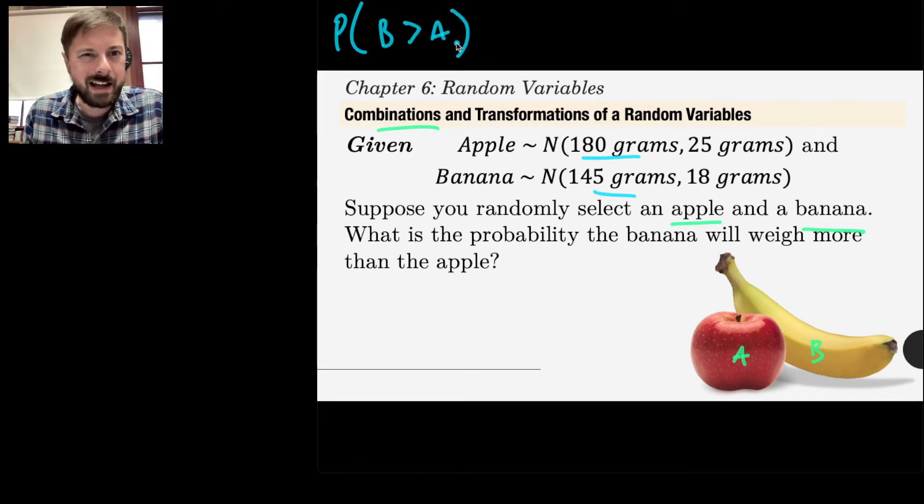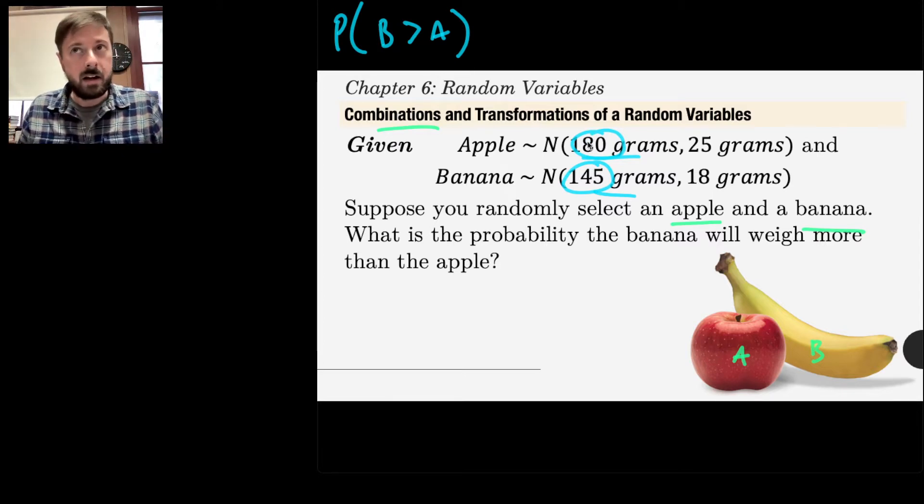So I'm wondering, what will be the probability that a randomly selected banana will be greater than an apple? If I had to guess, I'm guessing it probably would be not that likely, less than 50% because, on average, bananas are smaller than apples. So how could I figure that out? How could I answer this question?